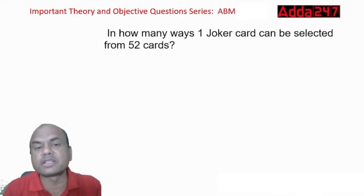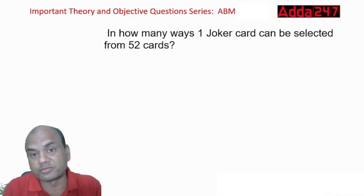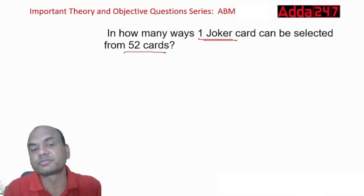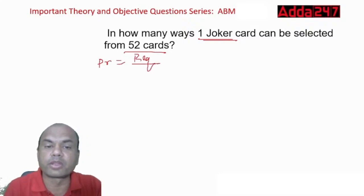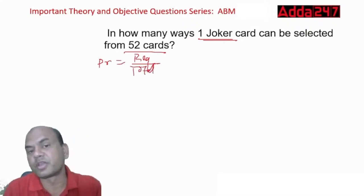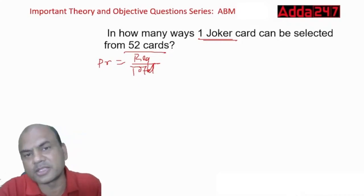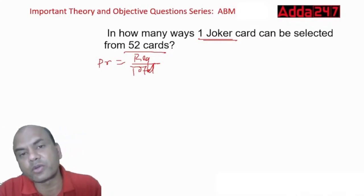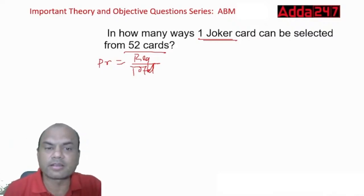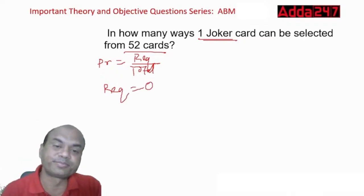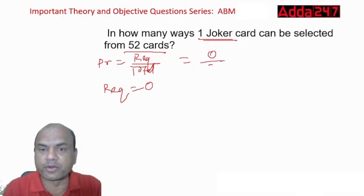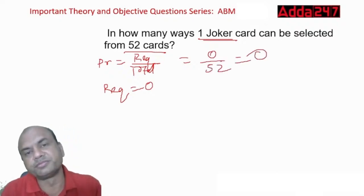In how many ways can one joker be selected from a pack of 52 cards? Probability equals required upon total. How many jokers are in a pack of 52 cards? Zero — because the two jokers in a pack are separate from these 52 cards. So the answer is 0/52, which equals 0.